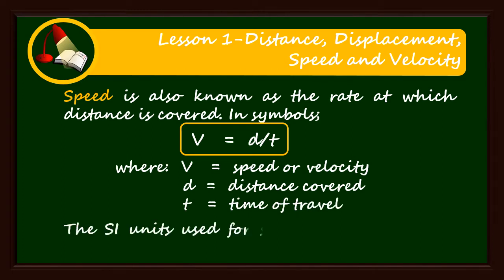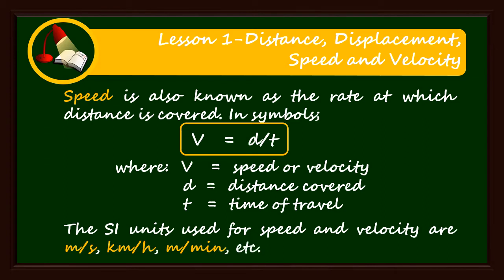The SI units used for speed and velocity are metre per second, kilometre per hour, metre per minute, and many others.